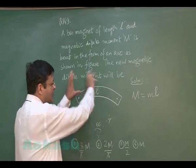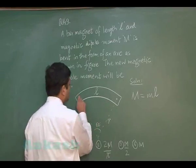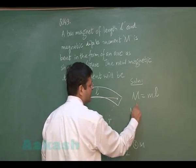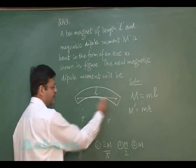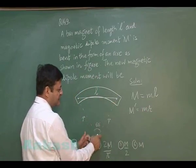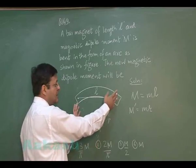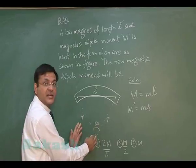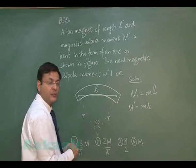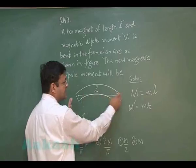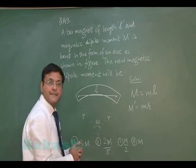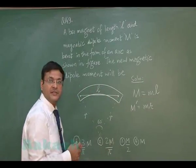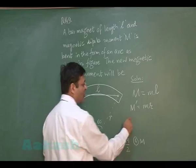Now when you bend it into an arc, the new magnetic moment m' equals m times r, where r is the distance from the center to the arc — the radius. With the angle being 60°, this naturally forms an equilateral triangle, which is why the straight distance is taken to be r. This is what we need to calculate.